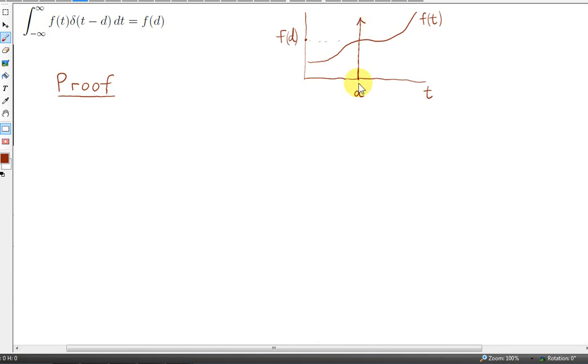So here is the picture. We have a delta function at d. I am assuming here that d is some positive value, though it doesn't have to be. So we have an infinitely tall spike at d. Here is the function f(t). And if we perform this integral we just pick out the value of function at d.